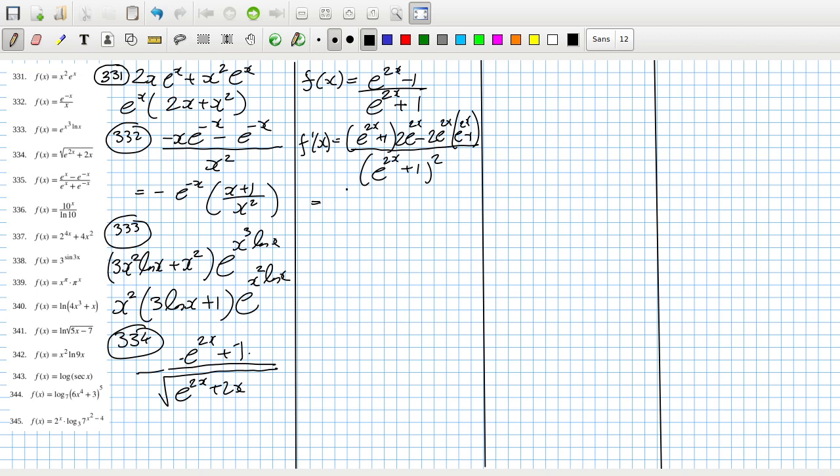You could probably multiply that out: 2 e^4x minus 2 e^4x, so that cancels. 2 e^2x minus 2 e^2x. Wait, now I have to be careful with the signs here. This one and this one and this one will cancel, but 2e plus 2e, so that'll be 4 e^2x over e^2x plus 1 squared. 2e and 2e, 4e, yeah I think so.